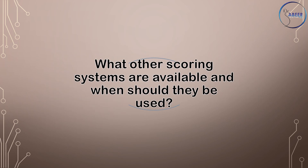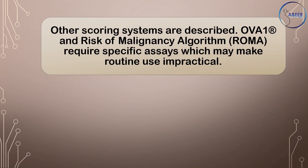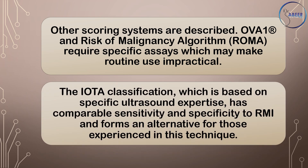What other scoring systems are available and when should they be used? OVA1 and Risk Malignancy Algorithm (ROMA) require specific assays which make routine use impractical. The IOTA classification, which is based on specific ultrasound expertise, has comparable sensitivity and specificity to RMI and forms an alternative for those experienced in this technique.